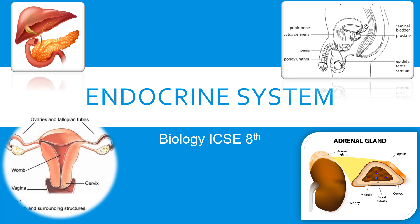Hello dear students, welcome back to Chinmoy's YouTube channel. Today we are here with part 2 of the endocrine system. In the previous episode I discussed the basics of the endocrine system and covered the thyroid, parathyroid, and pituitary gland — their functions and locations. In today's episode I'm going to discuss the other three important glands: the adrenal, pancreas, and the gonads, that is the testes and ovaries.